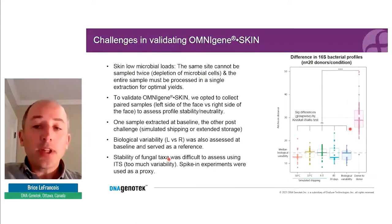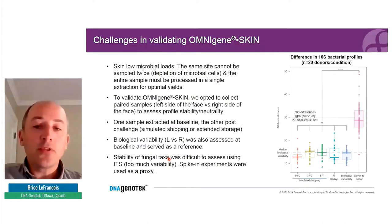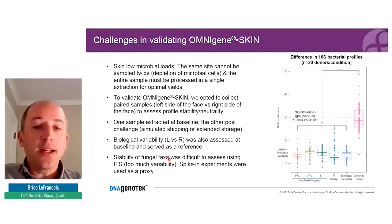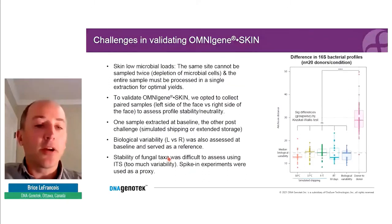We also looked at the stability of fungal taxa. We chose not to use ITS2 due to too much variability, and instead used spiking experiments with Malassezia globosa. For anyone interested, full details can be found on the DNA Genotech website in our white paper.